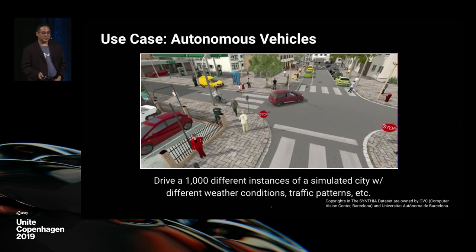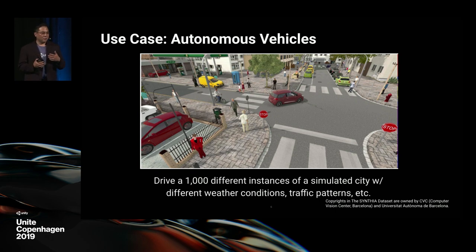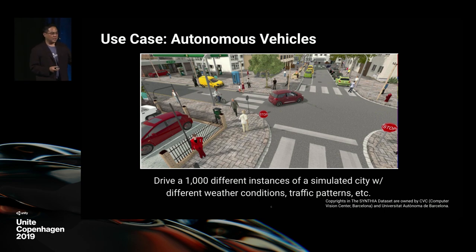The second scenario is autonomous vehicles. You've all heard on the keynote how it takes basically 11 billion miles to consider an autonomous vehicle road safe. The primary reason for this is the number of situations that you have to prepare your algorithms to handle — some involving fog, different pedestrian patterns, weather, and lighting.